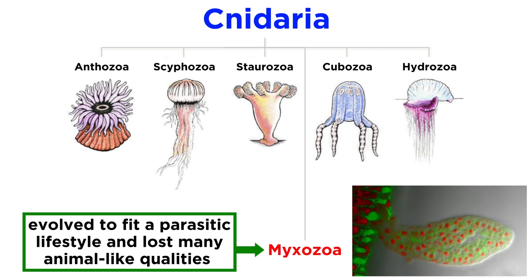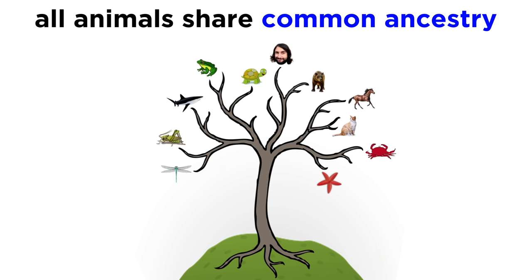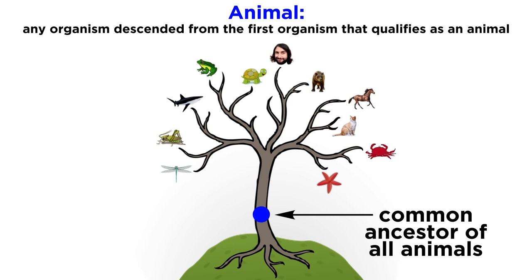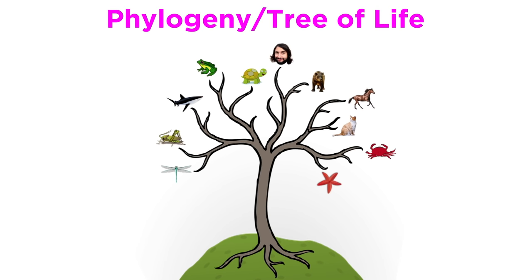So they're cnidarians, and they're animals, even if they no longer share all of the characteristics of other animals. Likewise, all animals share common ancestry — you and me, cats and dogs, lobsters, termites, even sponges and parasitic worms, we all share common ancestry. Therefore, an animal could perhaps be most accurately defined as any organism that is descended from the first organism that could be categorized as an animal. This phylogenetic view of an animal is key to zoology, and is sometimes encapsulated in the so-called tree of life — another thing we discussed in the biology series, so let's move forward and revisit that concept now.